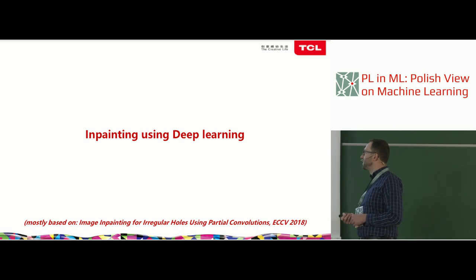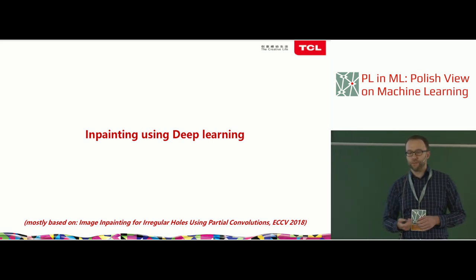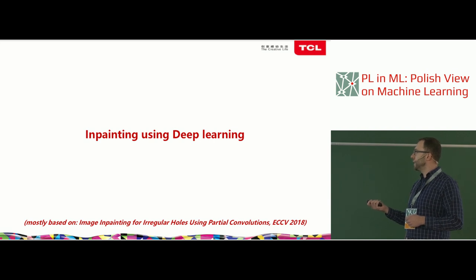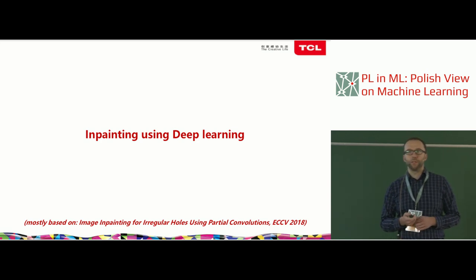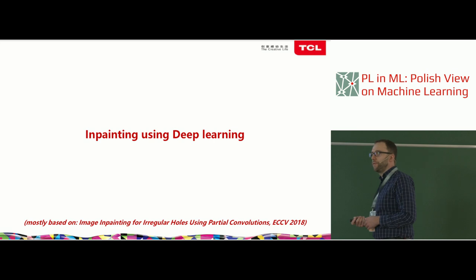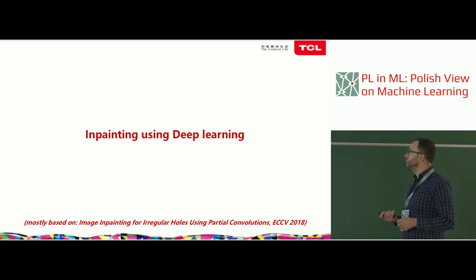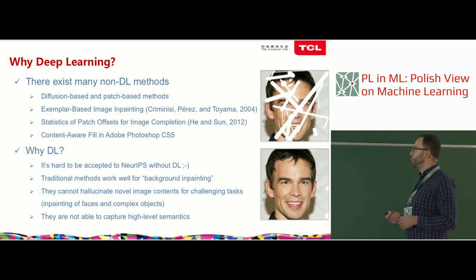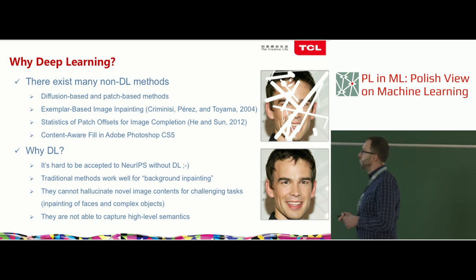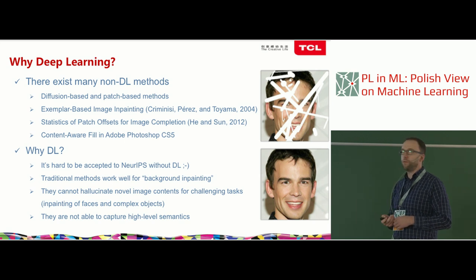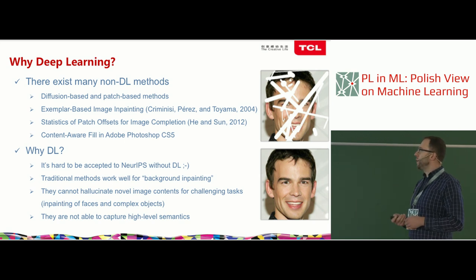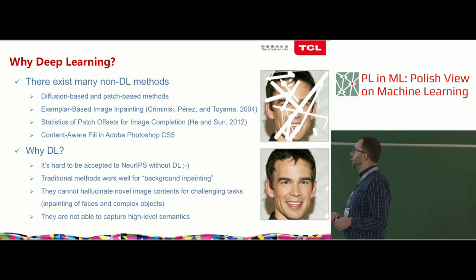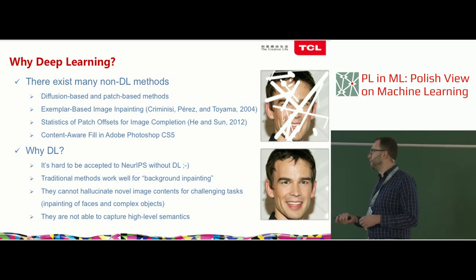Now I hope you are convinced this is an important problem. Our baseline approach is based on NVIDIA's quite recent paper introducing partial convolutions. Why deep learning? There exist many classical methods — example-based in-painting or patch-based — and commercial solutions like Adobe. It's also hard to be accepted to NIPS if you don't use deep learning.